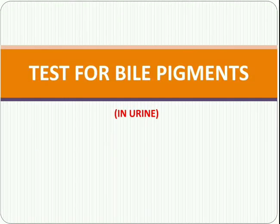Hey everyone, welcome back to the channel MLD Lectures. We are studying a series on chemical examination in urine analysis. Today we will discuss tests done for detection of bile pigments in the urine, and we will learn two methods: Fauci's test and Gmelin test for detection of bile pigments.